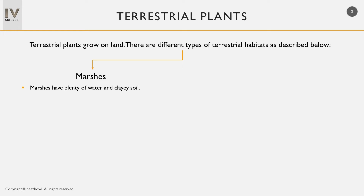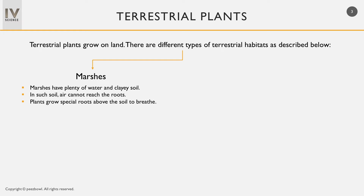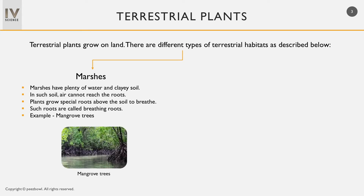Marshes is another terrestrial habitat. Marshes have plenty of water and clayey soil. In such soil, air cannot reach the roots, so plants grow special roots above the soil to breathe. Such roots are called breathing roots. Mangrove trees grow in marshes.